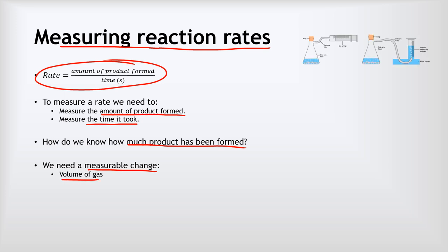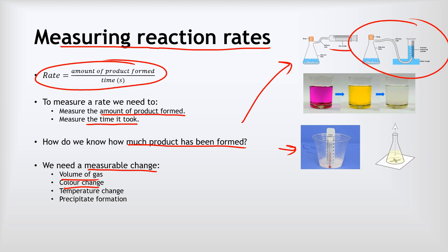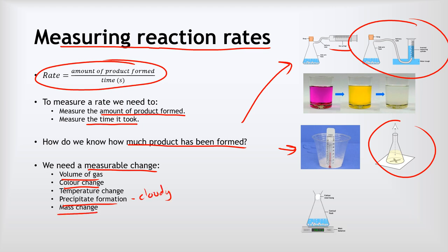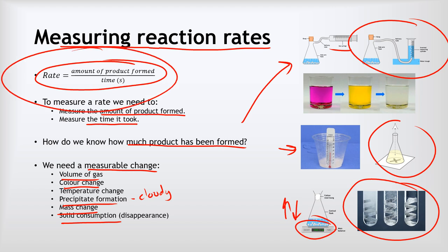It might be that we collect a volume of gas — either in a gas syringe or over water — or that we measure some kind of colour change, or the change in temperature over time. Maybe we measure the formation of a precipitate where the reaction goes cloudy, or the change in mass on a mass balance, or we might entirely consume some solid — the way that over time an acid will entirely dissolve some metal. Whatever it is, we need some kind of measurable change and we need to know how long it took, and we can use this equation to calculate our rate.